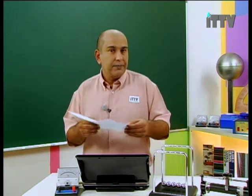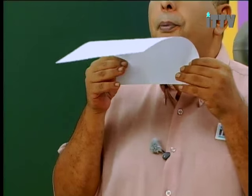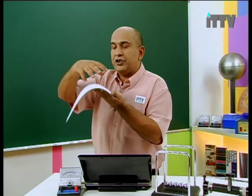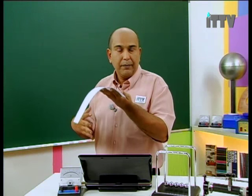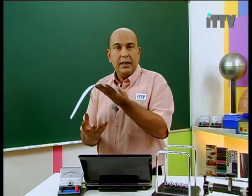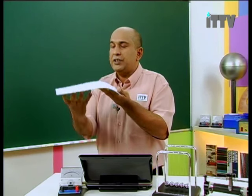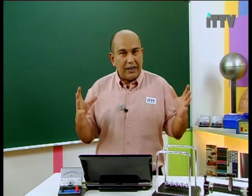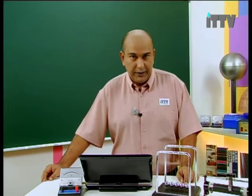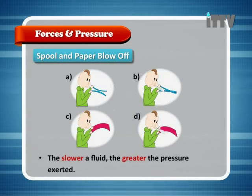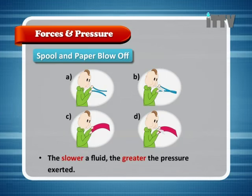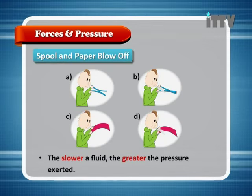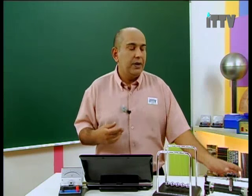This is Bernoulli's Principle in action. When I blow over the top of the paper, the fluid moves fast over the top, so a low pressure area is created compared to the surrounding. Underneath the paper, the pressure is higher. As air moves from high pressure to low pressure, it pushes the paper up. A fast-moving fluid produces a low pressure area; the slower a fluid, the greater the pressure exerted — high pressure pushes the paper up.